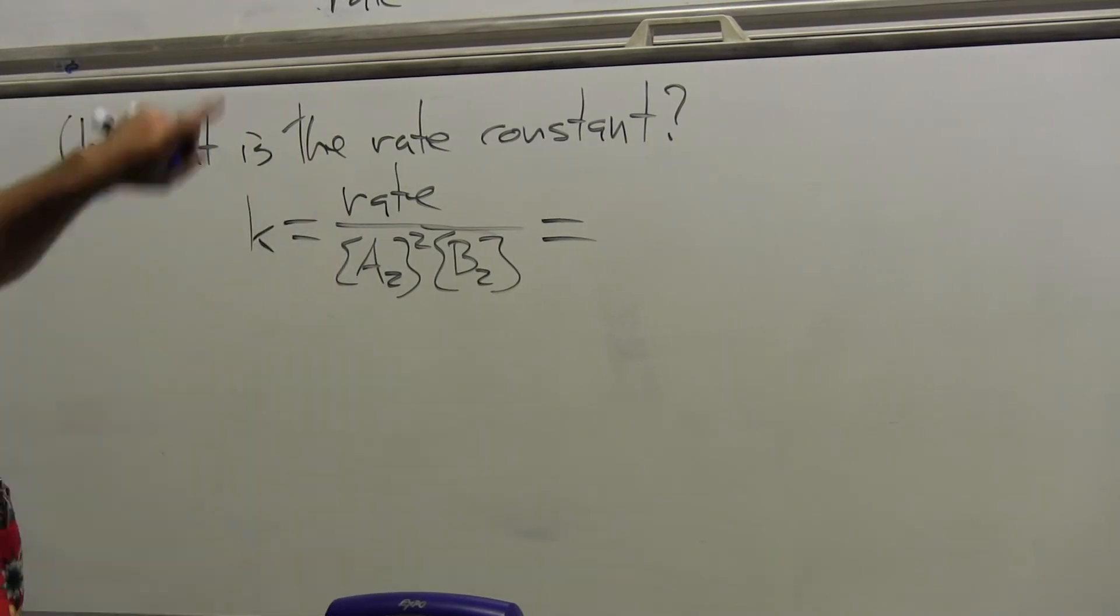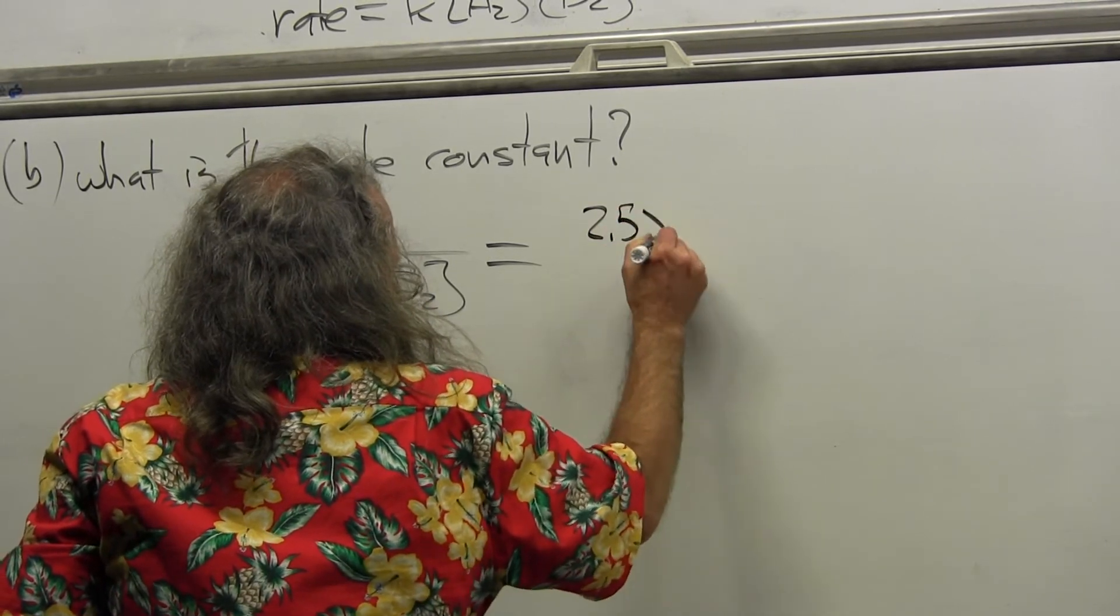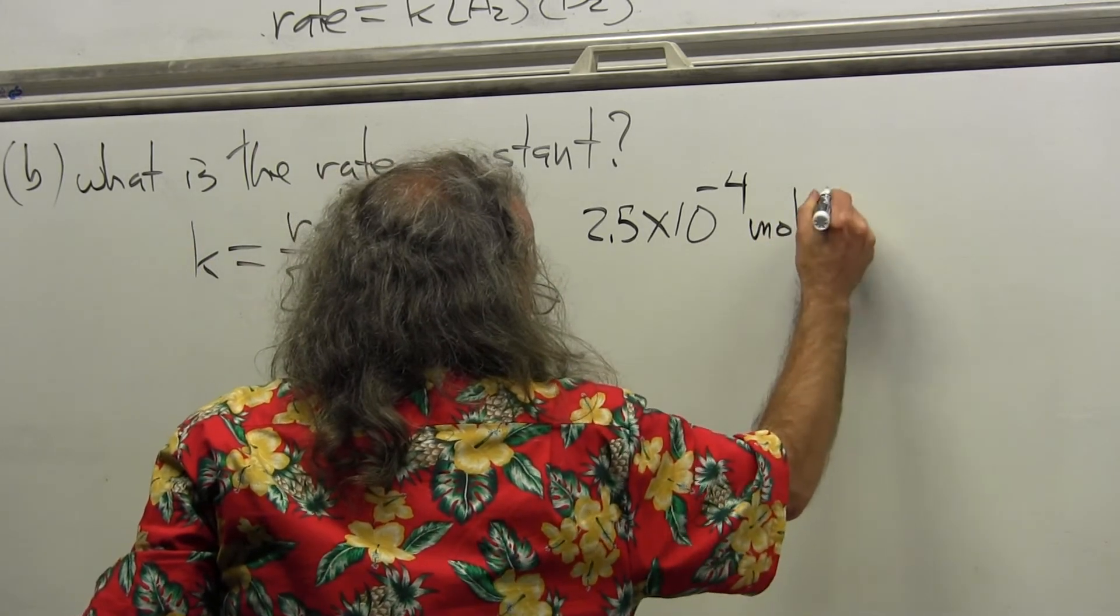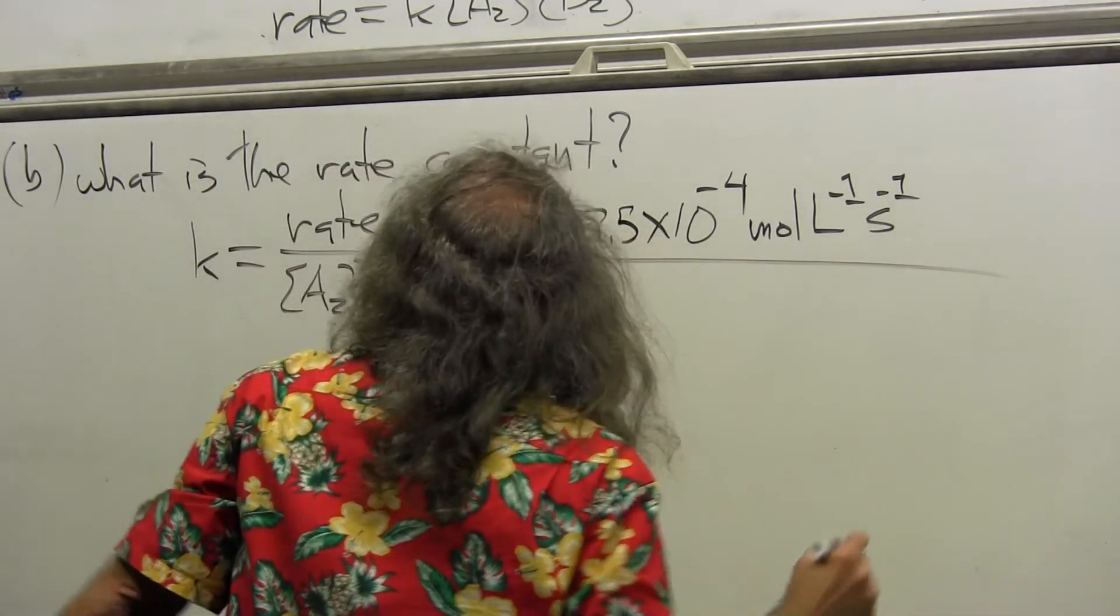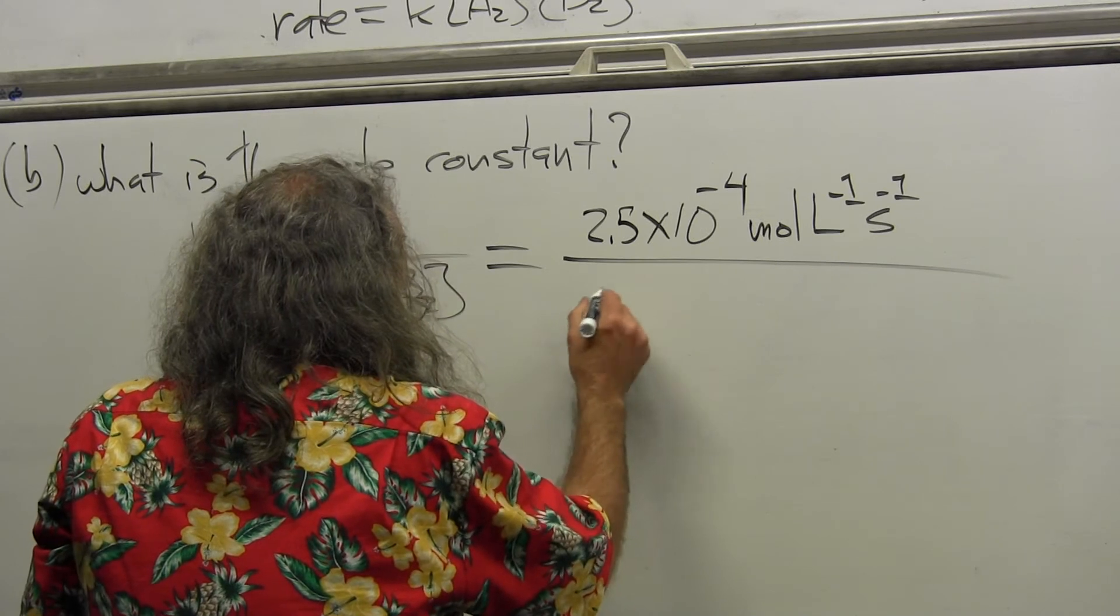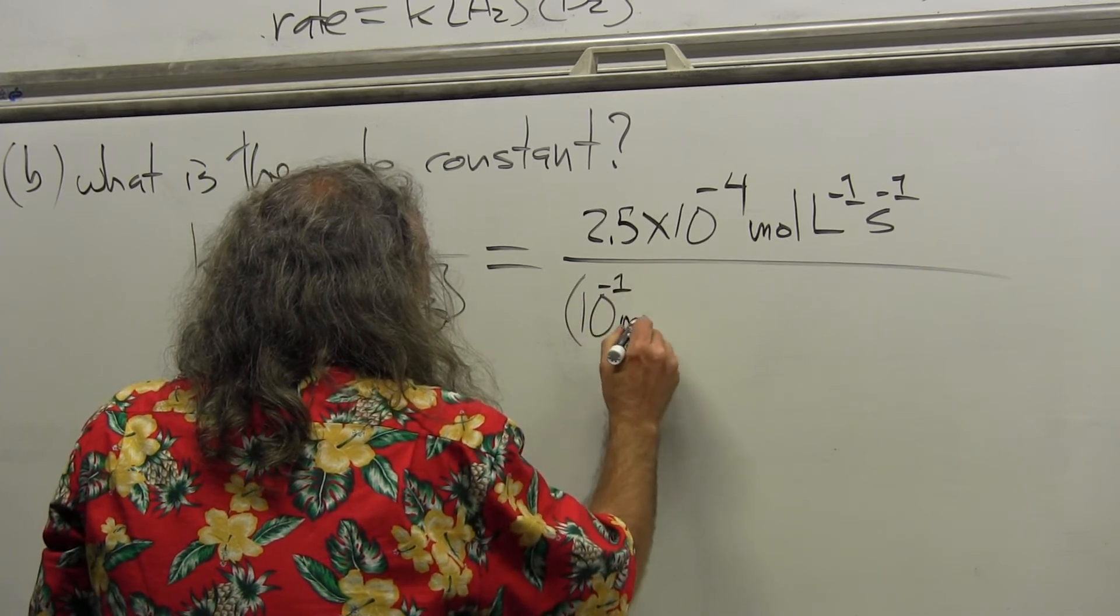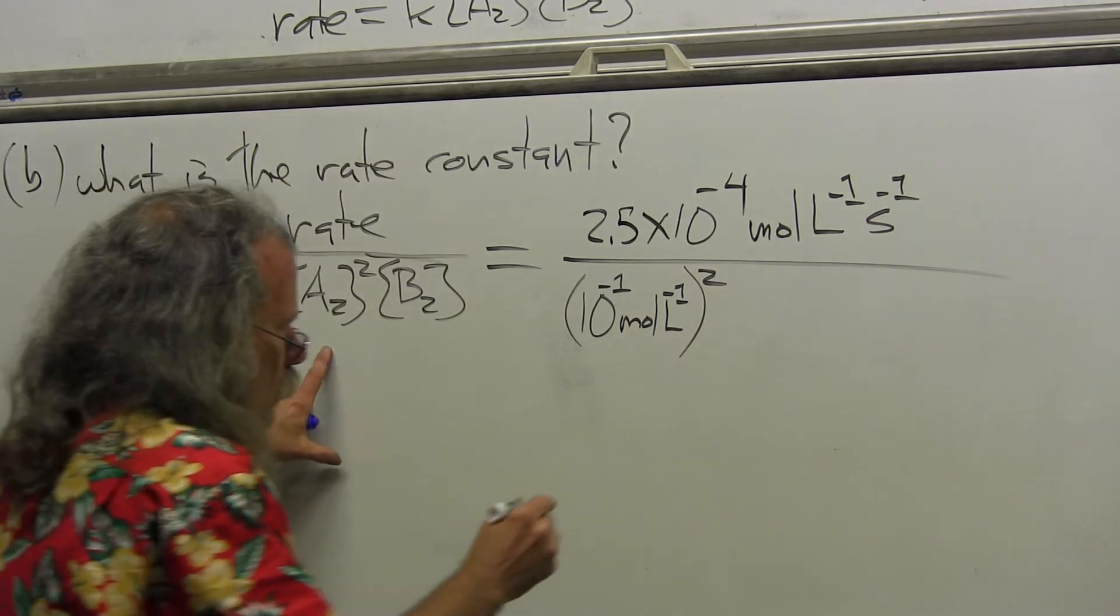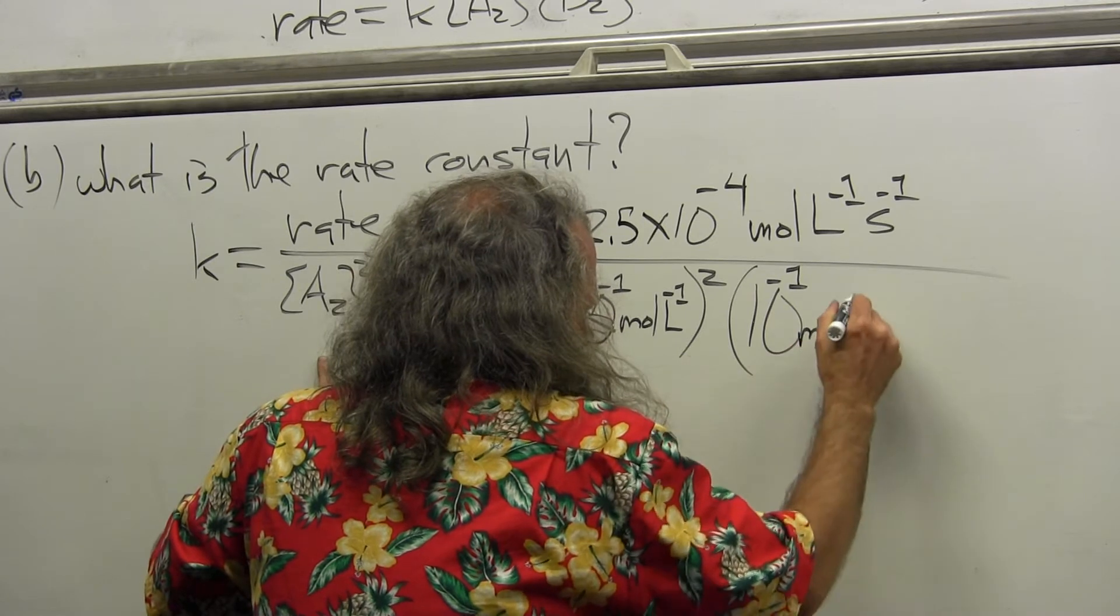Now I'm going to do it the way I would have picked one. I'll take the rate that's in experiment one and I'm going to include the units: 2.5 times 10 to the minus 4 moles per liter per second. And now I'm going to divide that by... the nice thing about these being the same concentration, this would be 10 to the minus 1 moles per liter squared, and then times 10 to the minus 1 moles per liter.